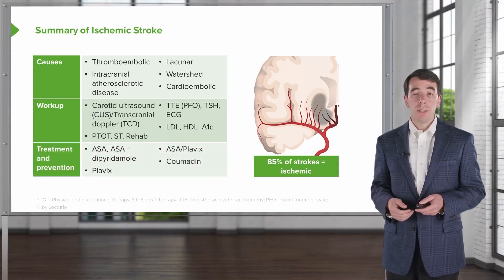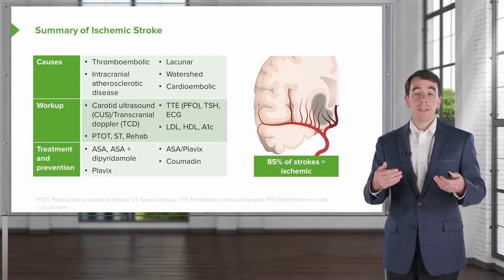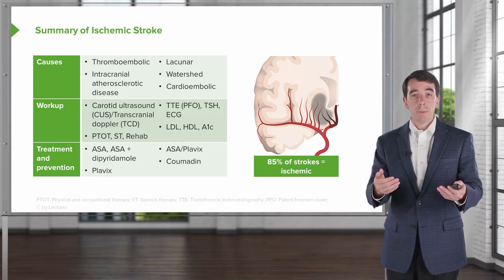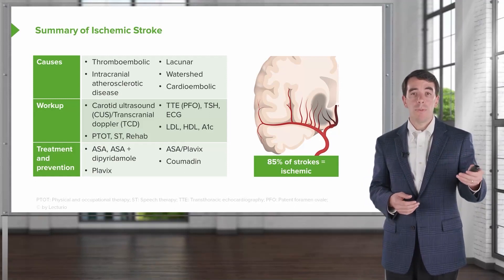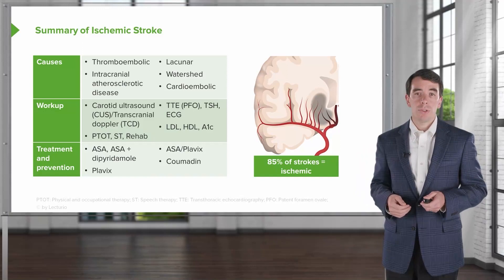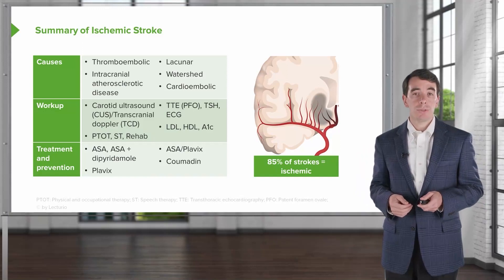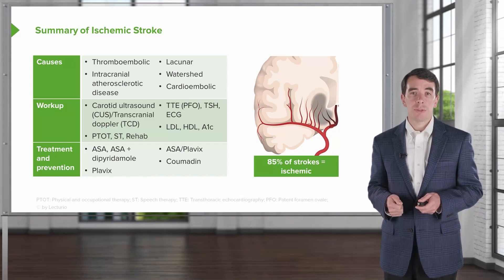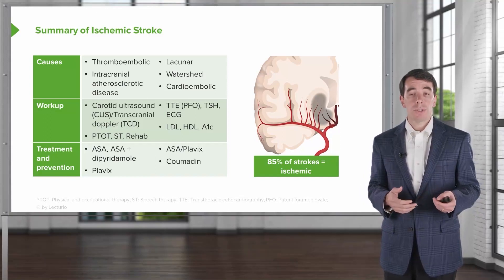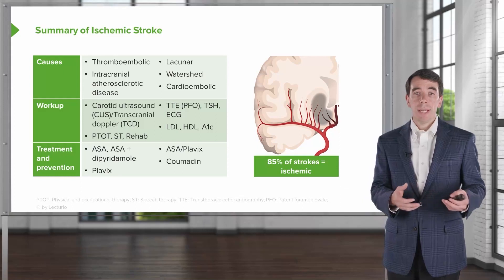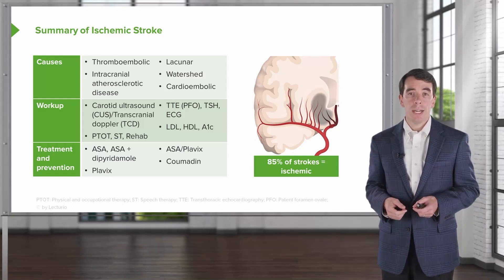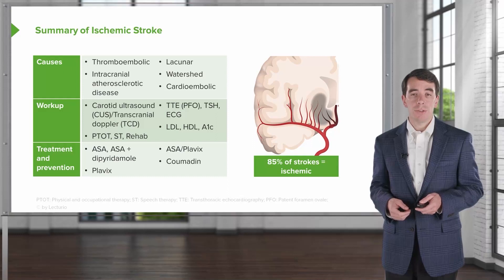Treatment is critical, and we want to prevent the next stroke. Primary prevention is to prevent a stroke before it occurs; secondary prevention is to prevent the next stroke once one has. We think about antiplatelet agents like aspirin, Plavix, and Aggrenox. We also think about anticoagulation — Coumadin, Lovenox, and some of the direct oral anticoagulant or antithrombotic medications.